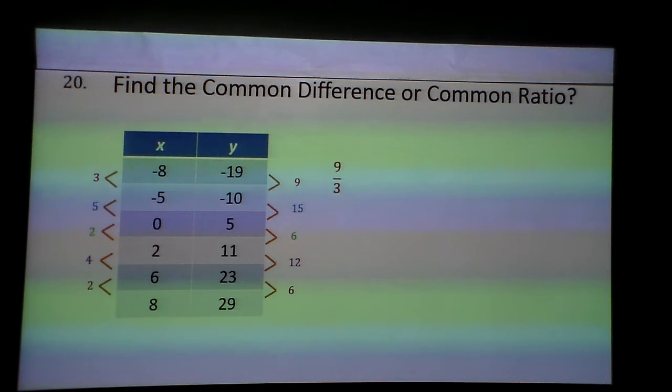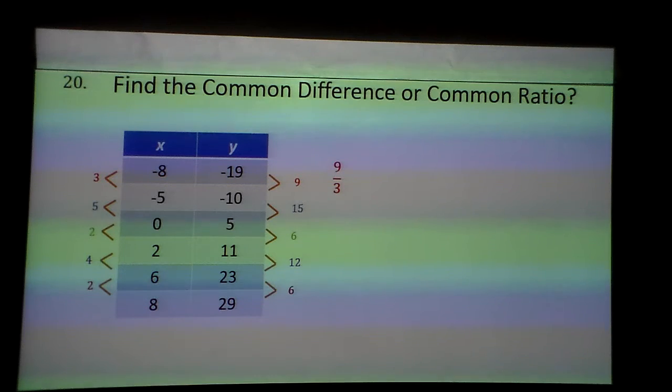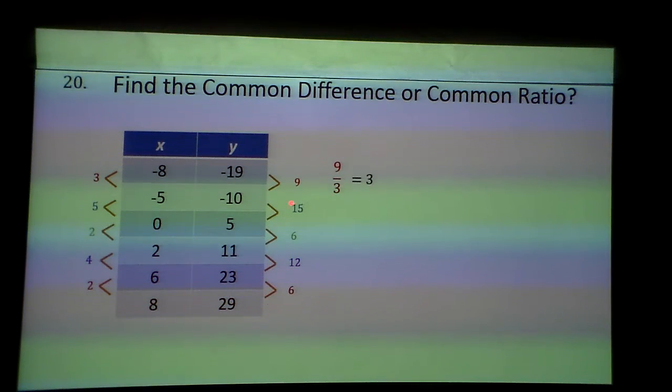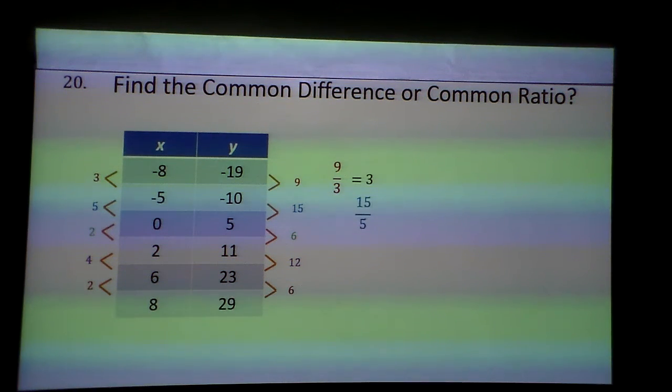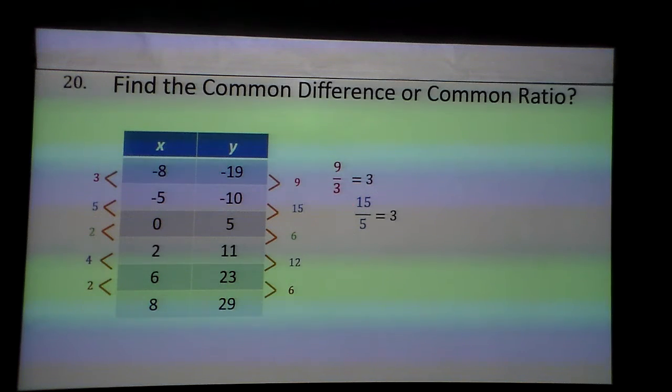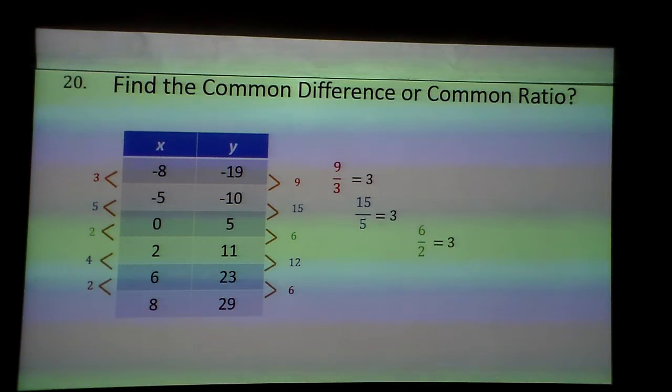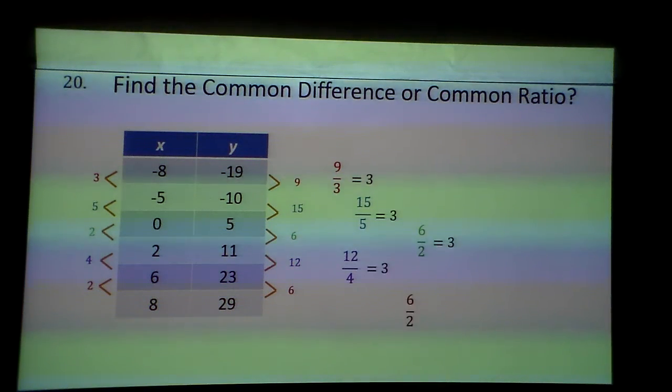And what I'm going to do is take the 9 over the 3, that's why I have these both colored in red, which is 3. I take the 15 over the 5, because that was the number that corresponds with it, that's a 3. What are you noticing about all of these? The answer is 3 when you divide them.